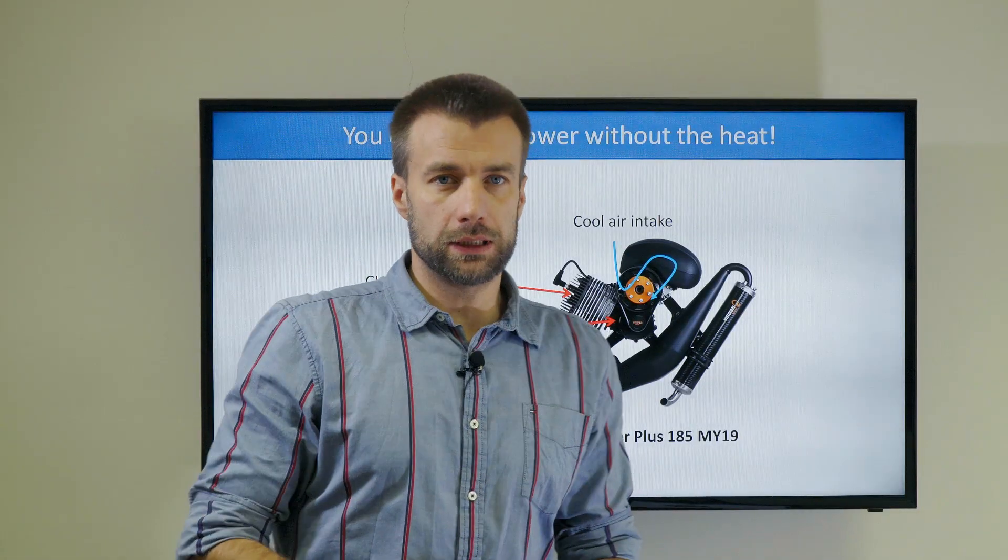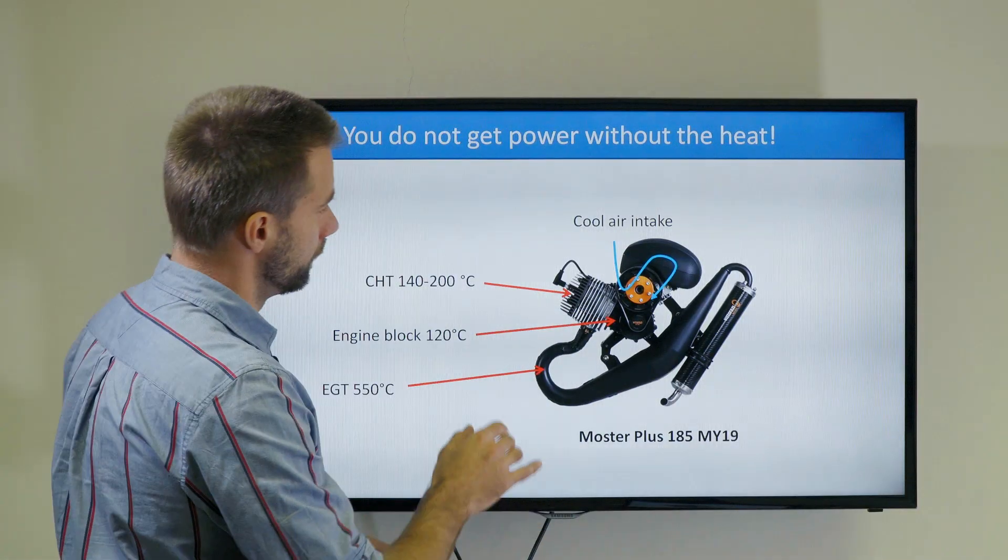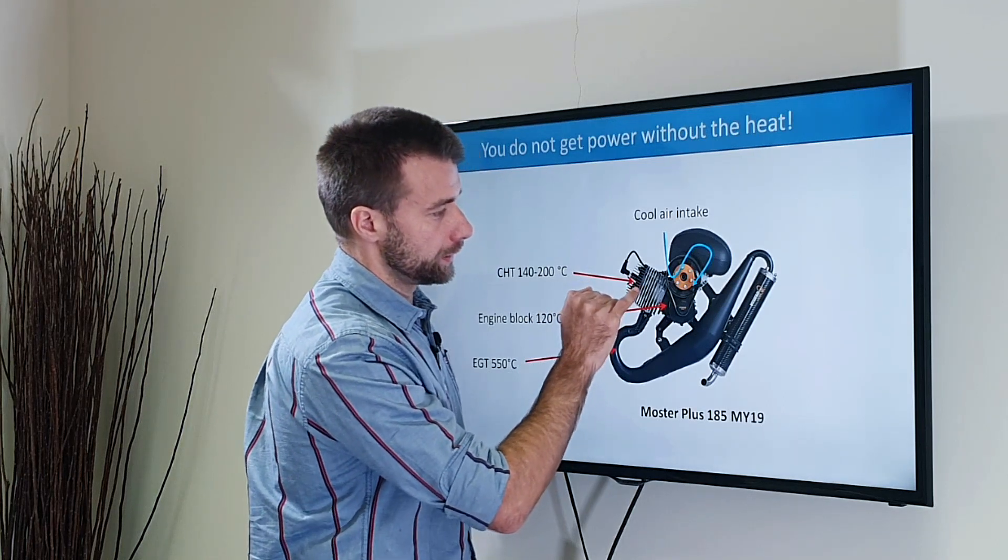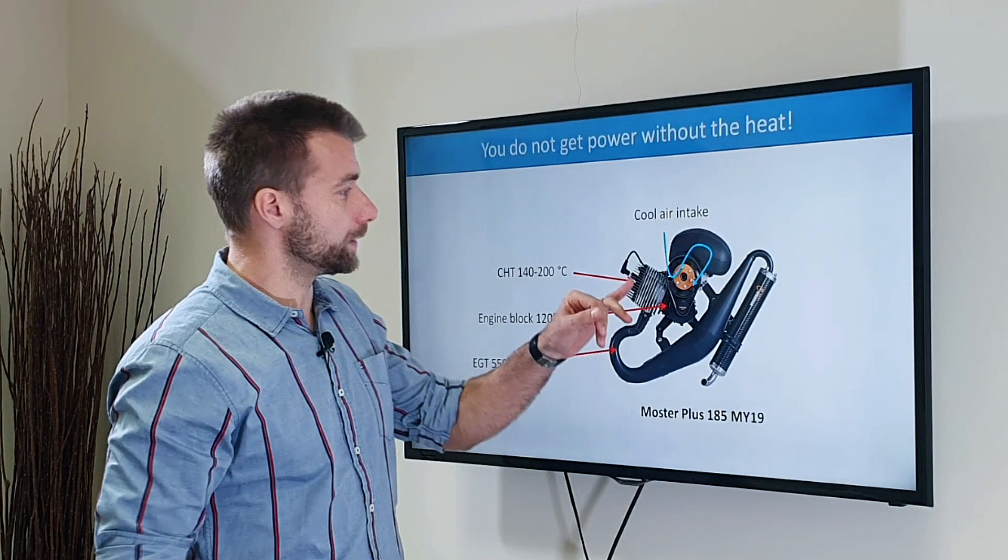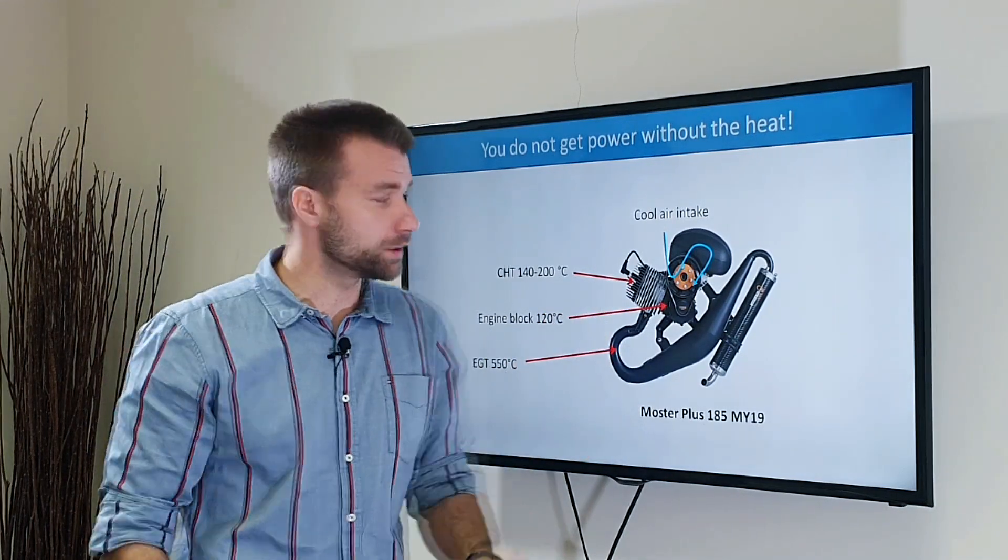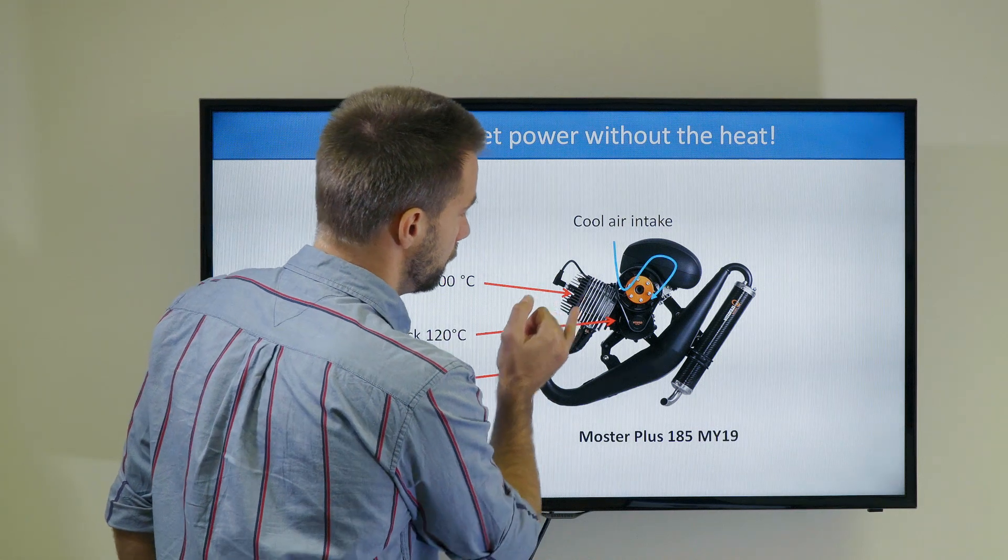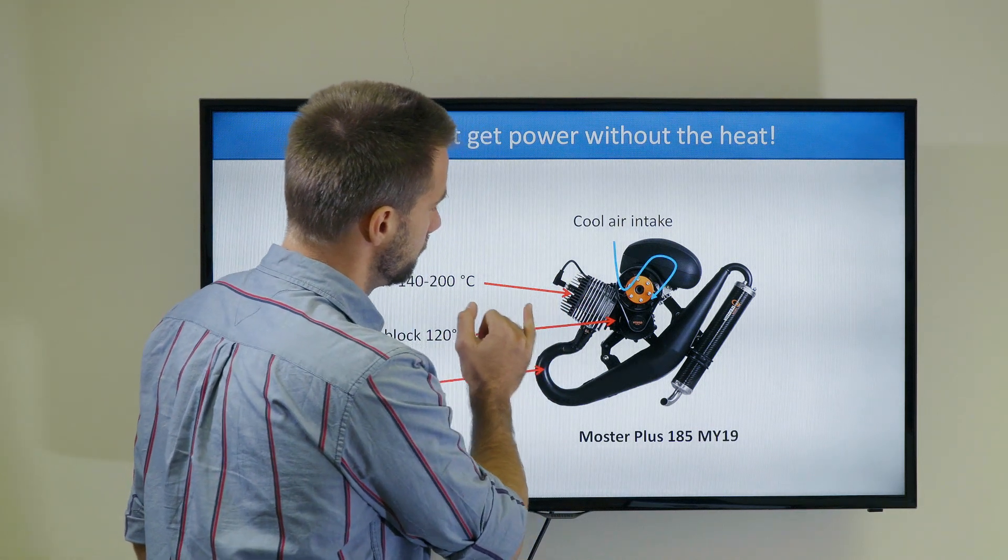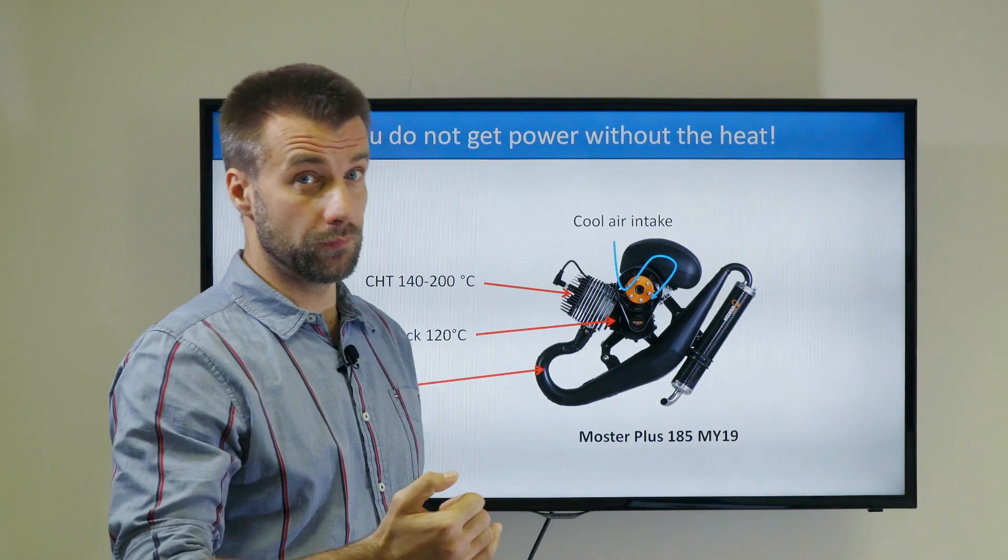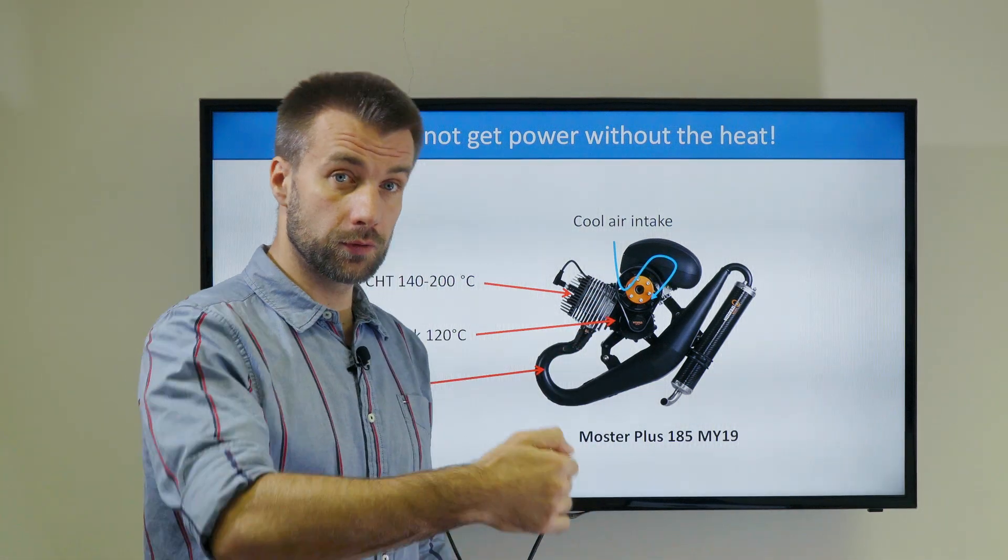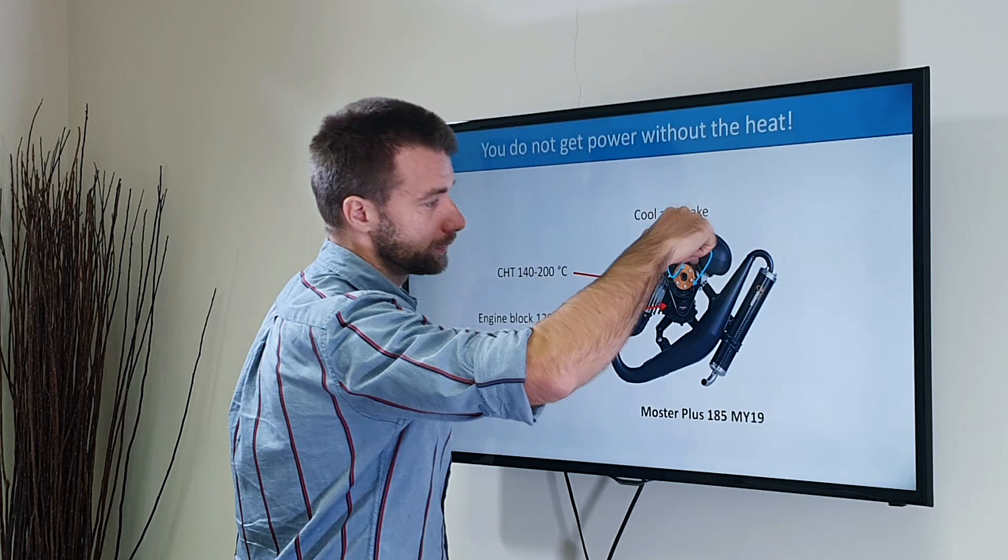You don't get power without the heat. That's the principle of combustion engines. The source of the heat is right here, underneath the cylinder head, so the cylinder head is probably the hottest part of the engine. Then the cylinder gets a lot of heat exposure and gets cooled by these ribs. The piston obviously gets a lot of heat and is cooled from the bottom as the cool air comes in.